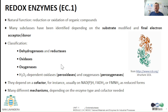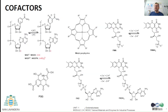They depend on a cofactor, as I will show you in the next slide, and they present different reaction mechanisms depending on the enzyme and cofactor used. These biocatalysts depend on a small organic or inorganic molecule called a cofactor, also named as coenzyme or prosthetic group, which is responsible for the electron transfer. The most common ones are derived from nicotinamide, such as NAD or NADP, or flavin, such as FMN or FAD. There are also many other examples, such as those derived from metalloporphyrins.